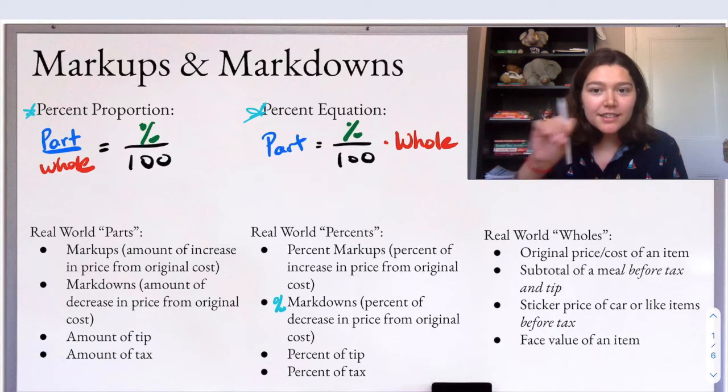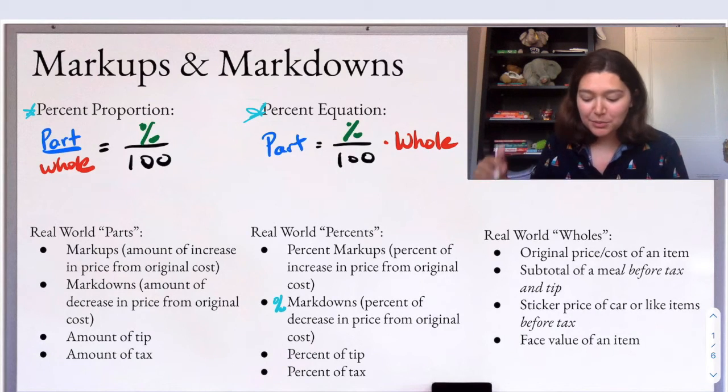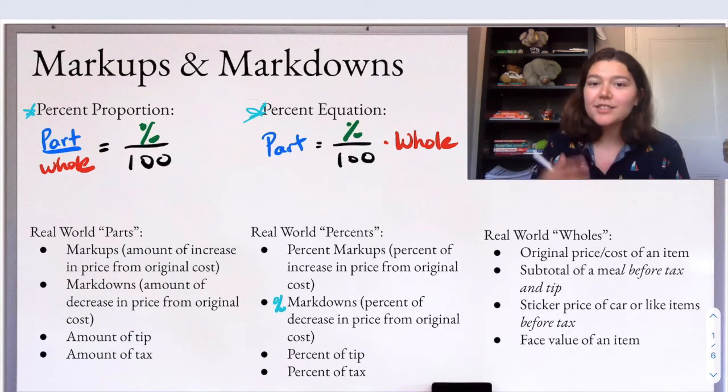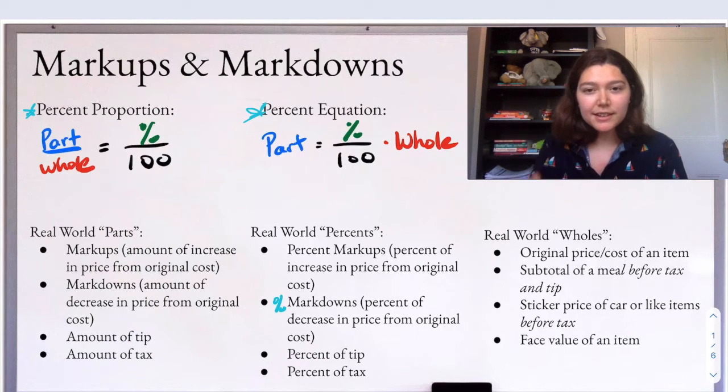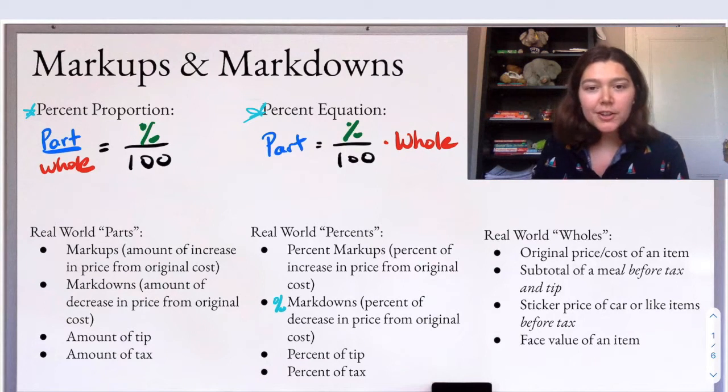They're advertising this price, but then there's going to be fees, there's going to be taxes, there's going to be stuff they add on top of that. Or maybe they'll give you discounts and it'll go down, but it's what they're advertising. And then the face value of an item, that's really just another word for the original cost, the sticker price, what they're advertising.